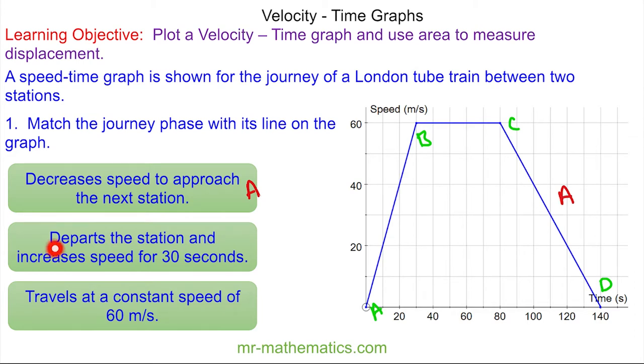For the next one, it departs the station and increases in speed for 30 seconds. So now we have starting at zero, increasing in speed to 60, and this takes 30 seconds. So this part goes here. And then we have it travels at a constant speed of 60 meters per second. You can see here the speed does not change, the speed is constant.